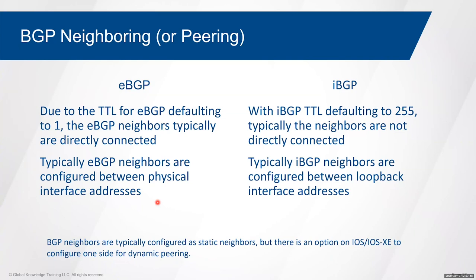For IBGP, a TTL of 255 is assumed, so loopback interfaces are the most typical choice for IBGP relationships — routing across a cloud of devices within a provider or core environment with an underlying IGP providing reachability between BGP speakers. So the general rule: use loopback interfaces for IBGP, physical interfaces for EBGP — though these aren't hard requirements. BGP normally uses static neighbor statements on both sides, which means a huge number of static configurations when thinking about internet-scale deployments.